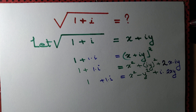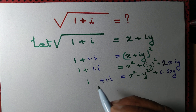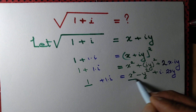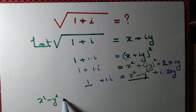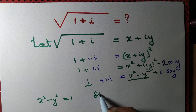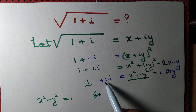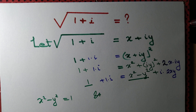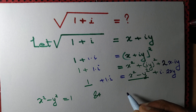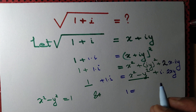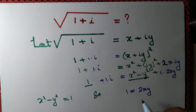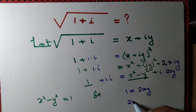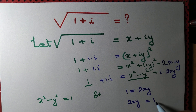Now, two complex numbers are equal if and only if their real parts are equal and their imaginary parts are equal. So x² - y² = 1, and 2xy = 1.